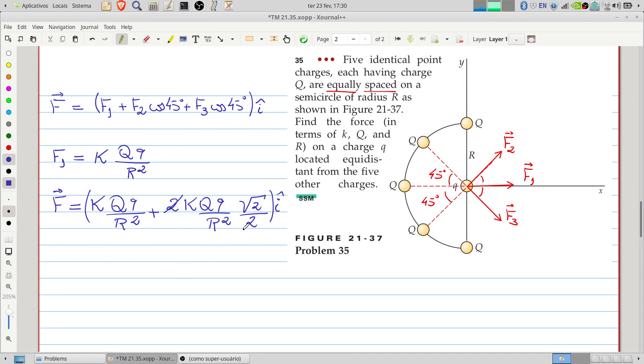So, here we can cancel these terms. And we will find F equals K times Q times Q over R squared times 1 plus square root of 2 in the x-direction.